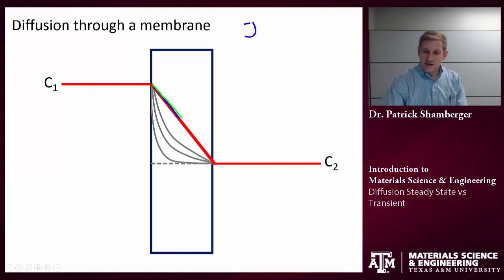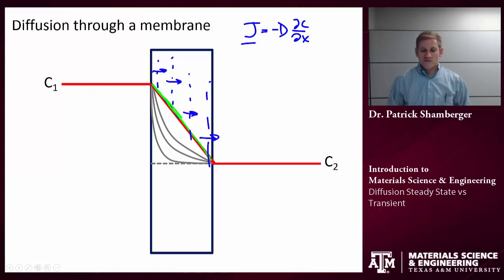So why is that? If I look at Fick's first law, the diffusion flux is proportional to the concentration gradient. So the slope is constant along this whole region. And what that means is the flux here is the same as the flux here. If I look at different planes in the middle of this membrane, it's the same as the flux here, and it's the same as the flux there, because the slope is equivalent at all those places.